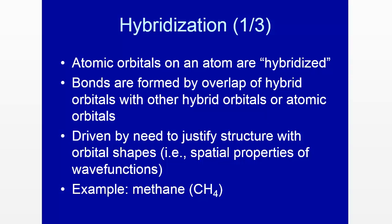So atomic orbitals are hybridized in hybridization. It's still valence bond theory in the sense that orbitals on different atoms — now including not only atomic but hybrid orbitals — overlap to form a bond. This came about because it was driven by the need to justify structure with orbital shapes. The idea of hybridization was thought up by Linus Pauling in the 1930s.